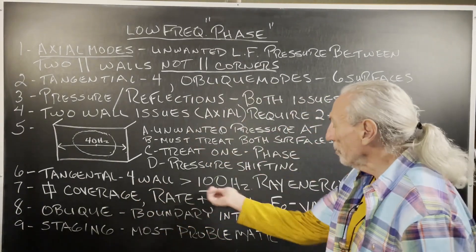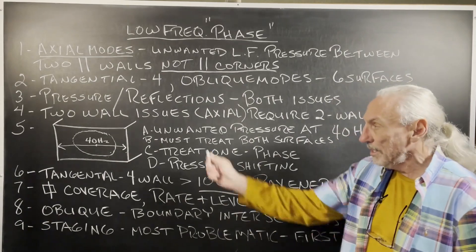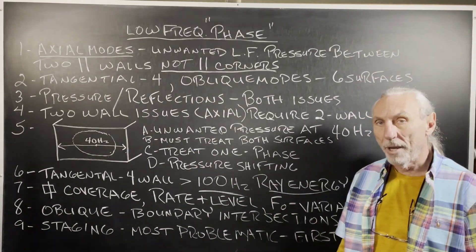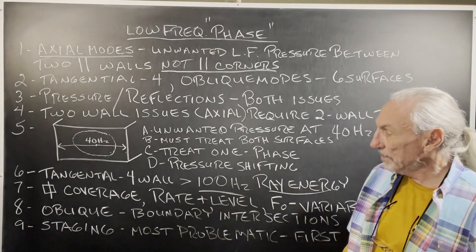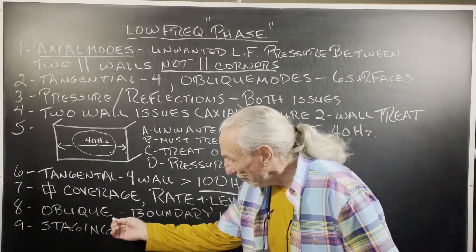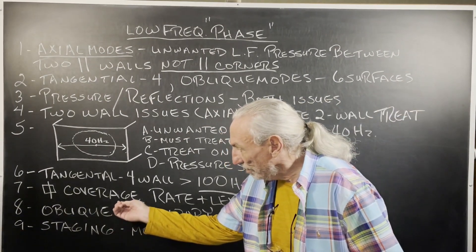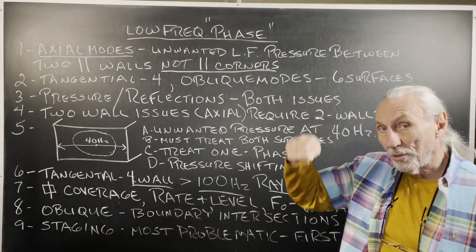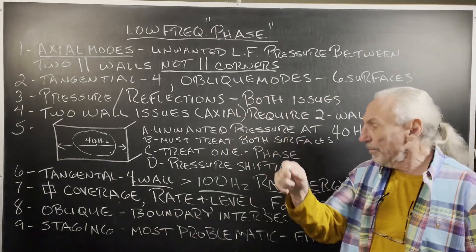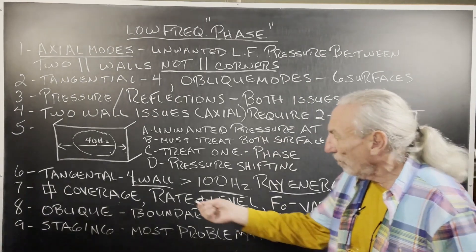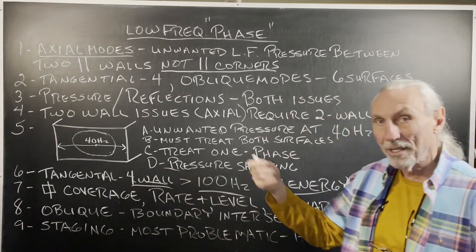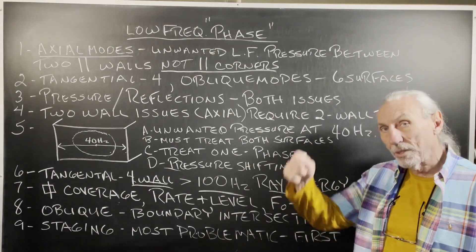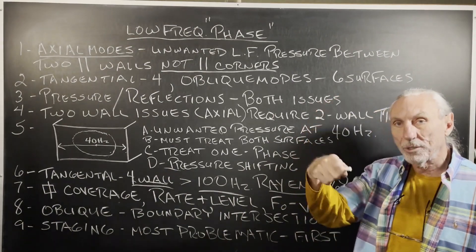Tangential modes are four-wall issues, usually above 100 hertz — that's ray energy. Low frequency is wave energy, like oceans; rays are like sunshine. With tangential four-wall issues, that could be floor to ceiling, sidewall to sidewall. Really, instead of 'wall' we should say 'plane,' but that'll confuse people, so we'll stick with wall. It's really surfaces — it can be floor to ceiling, sidewall to sidewall, front to rear.